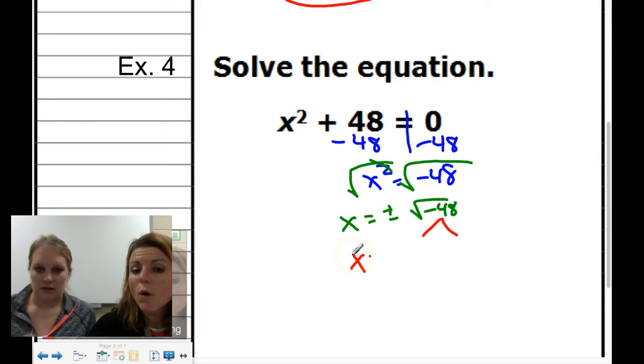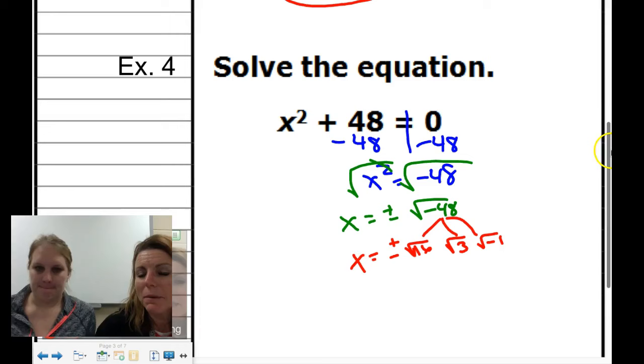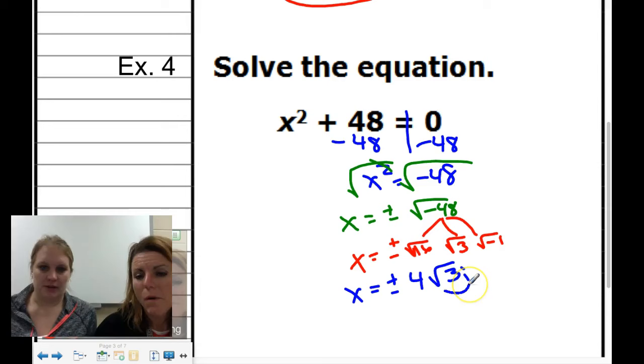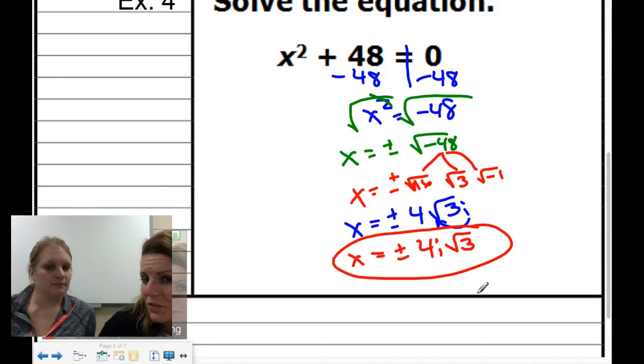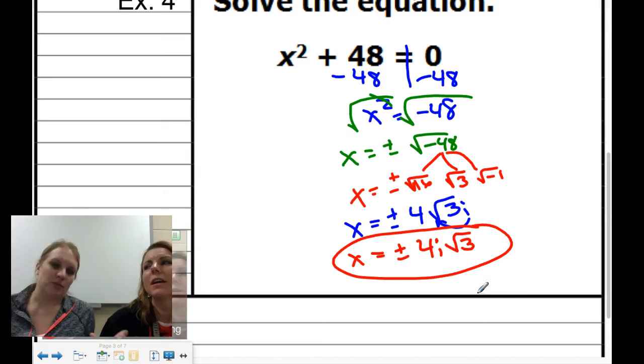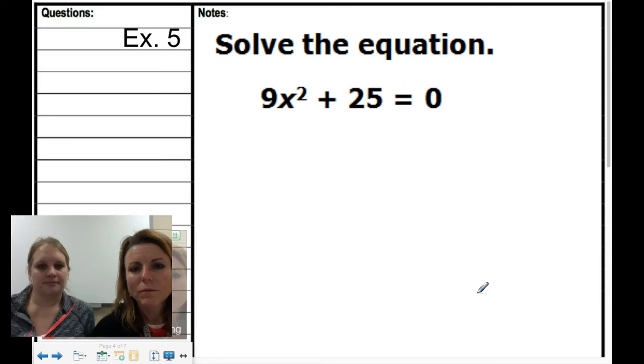The good numbers that work are 16 and 3. What you're trying to do when you're splitting that apart is come up with a perfect square times another number that gives us 48, and the perfect square that works is 16. Square root of 16, square root of 3, and square root of negative 1. We want to bring the i up front. The final answer is x equals plus or minus 4i square root of 3. If you would have chosen square root of 4 times 12, that would work, but you'd have to break the 12 down again. You'd have to just keep going a little bit longer.